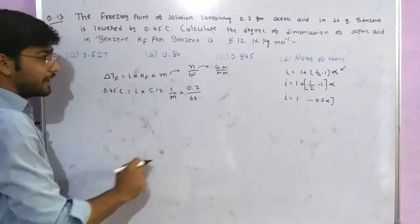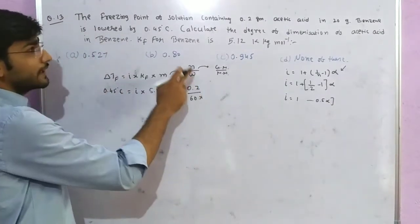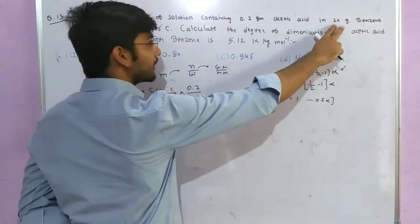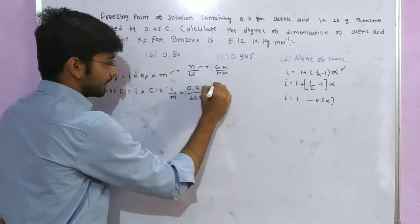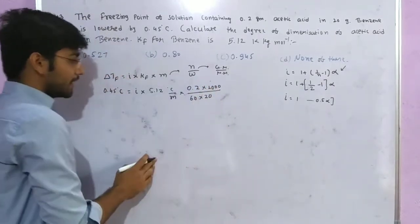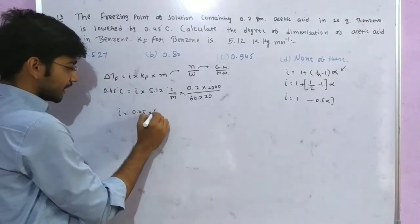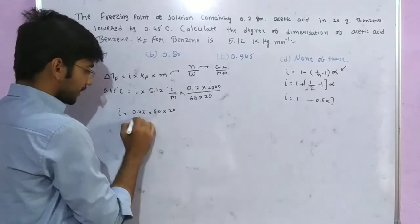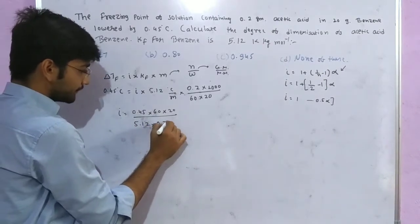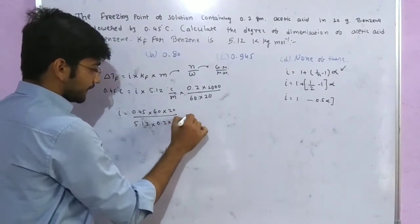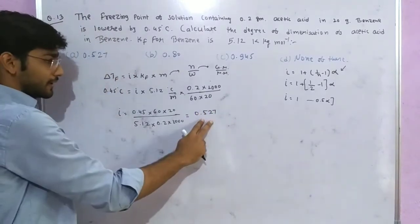60. The molecular mass of acetic acid is 60. Weight of solvent is 20 gram, converted to kilograms by dividing by 1000. Calculating i: 0.45 times 60 times 20 upon 5.12 times 0.2 times 1000 equals approximately 0.527.